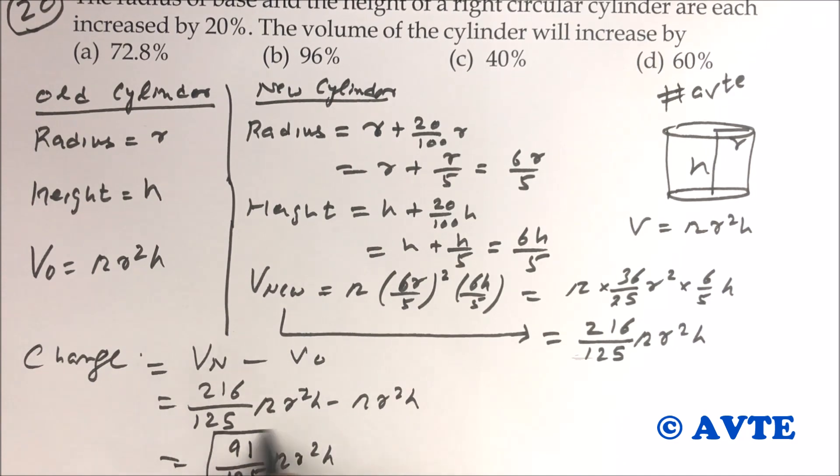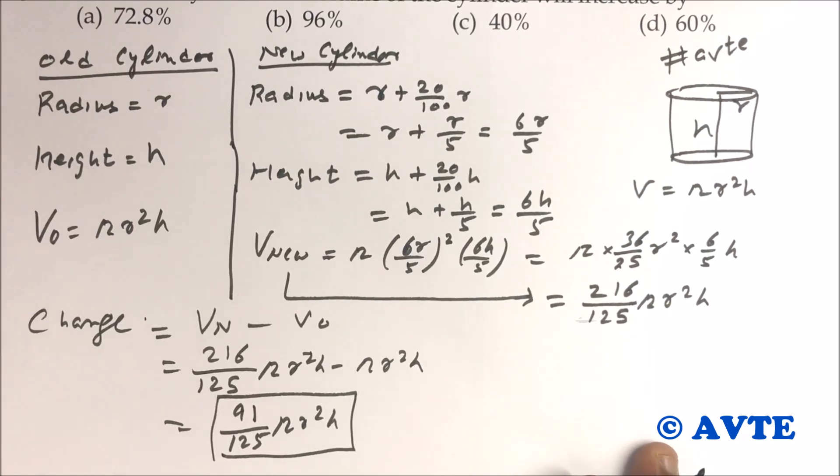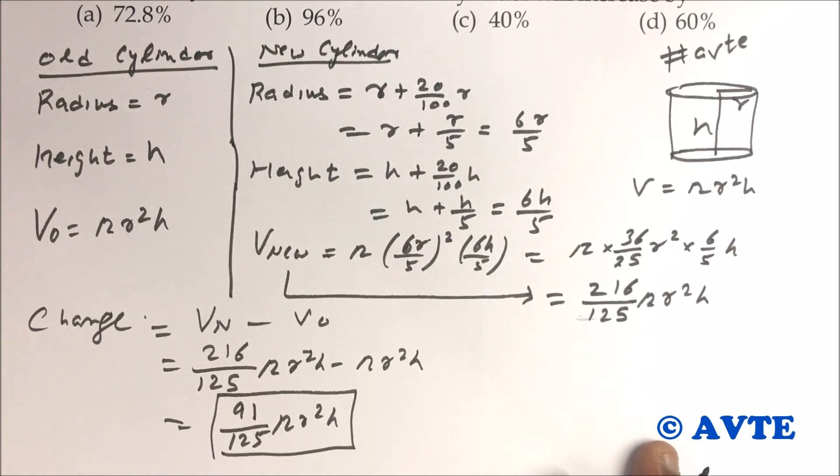You can see this is 91 upon 125 pi r square h. So guys, this is the change in the volume, volume of new cylinder minus the old cylinder.